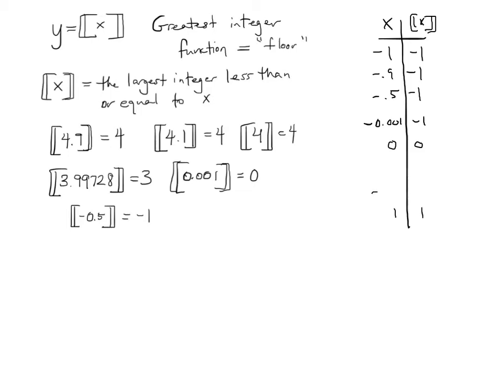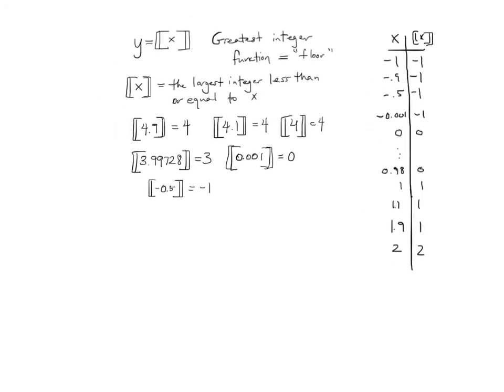And then 1 is 1. But right before 1, 0.98 will give us 0. And then 1.1 gives us 1. 1.9 gives us 1. And then when we hit 2, we've got 2, and so on and so on. So how are we going to reflect this in a graph?